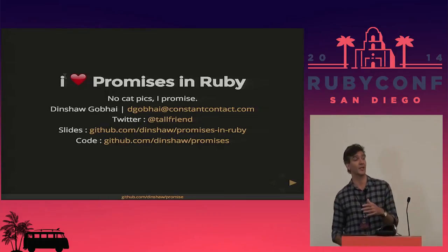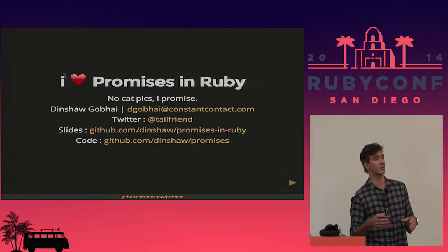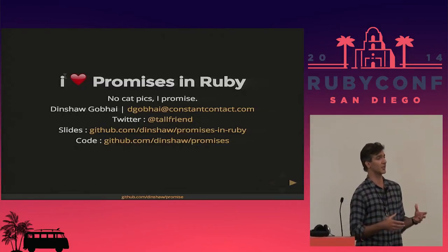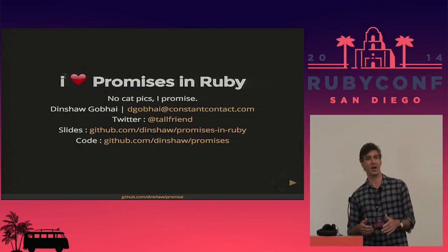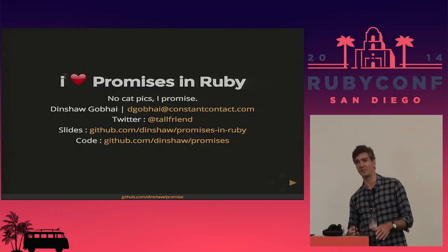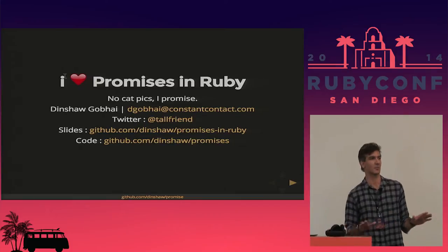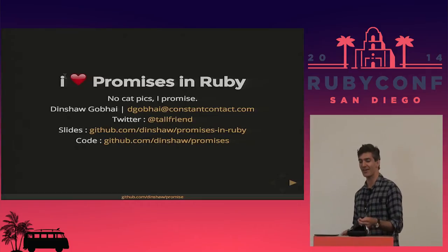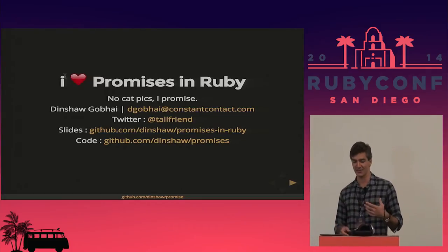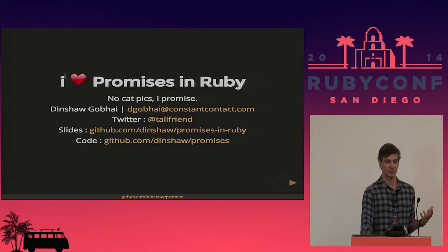I took a look, it looked really cool, and I did a very superficial implementation in Ruby and we used it for a little while. Then this talk got accepted, so I went back to look at promises again and realized that I had completely missed the point of promises in Ruby. So I took a deeper dive, and it turns out it's just a really cool pattern, and watching it happen in Ruby is really cool too.